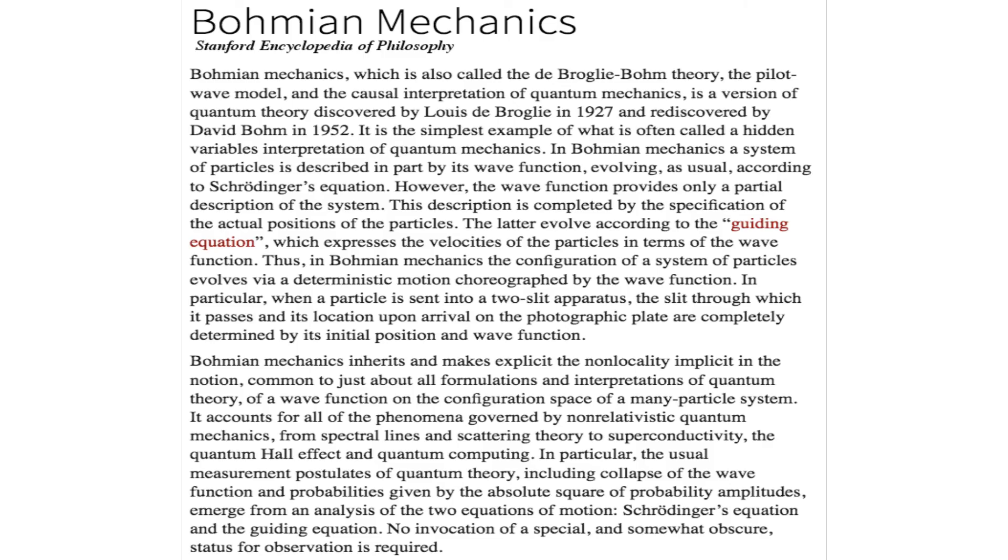It should be said that experiment alone cannot yet tell us which interpretation of quantum mechanics is correct, and this may be the case forever. At the least, Bohmian mechanics should be considered alongside the Copenhagen, many worlds, consistent histories, and other interpretations of quantum mechanics. But I think that when investigated, Bohmian mechanics will be found superior because it is straightforward and concrete, if not simple.